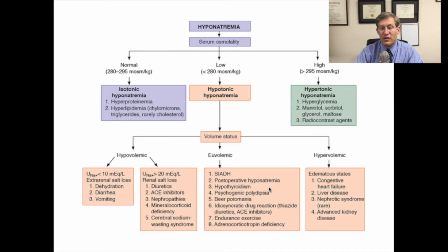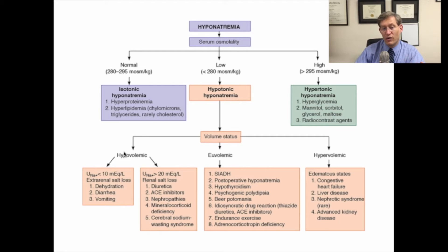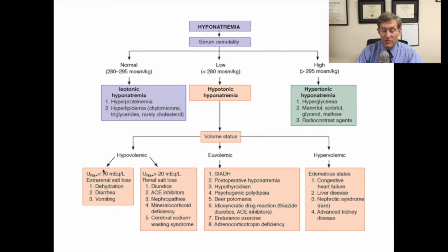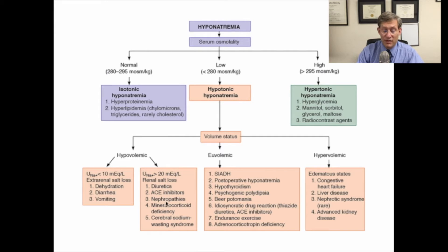In hypovolemic hyponatremia, the patient has lost both salt and water and has lost more salt than water. It's important at that point to check a urine sodium to see if it's low or high, to help determine whether there are extra-renal sodium losses or renal sodium losses, with some examples listed on the slide.